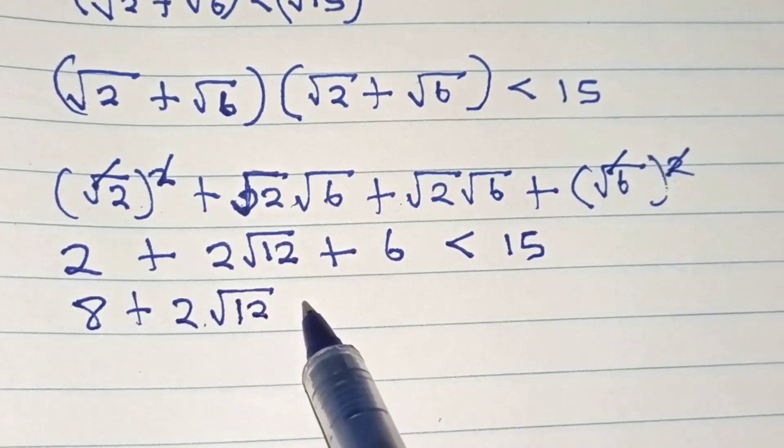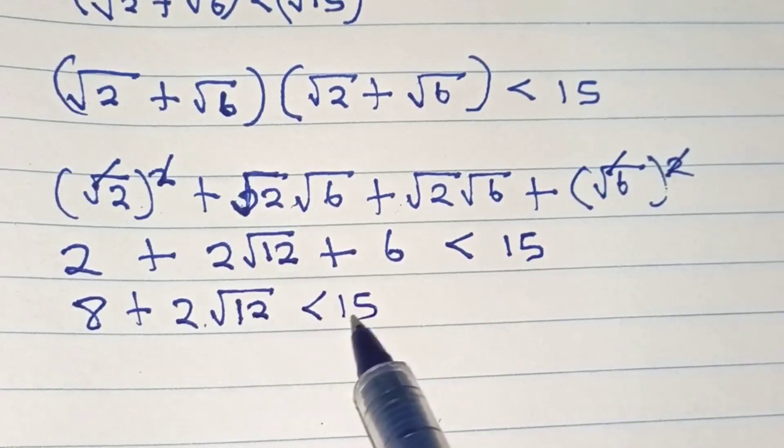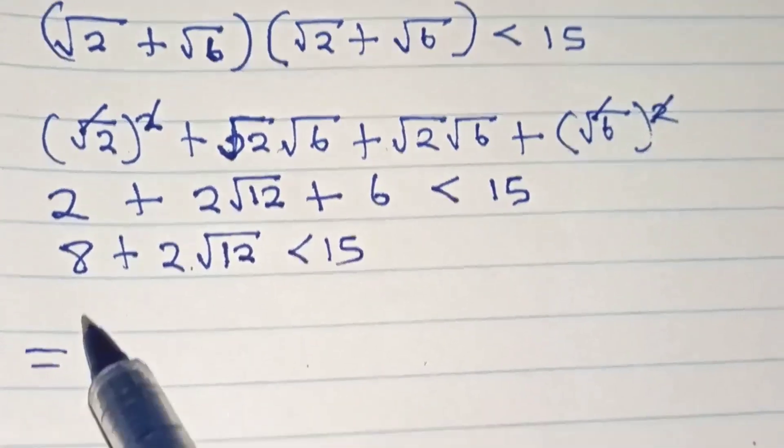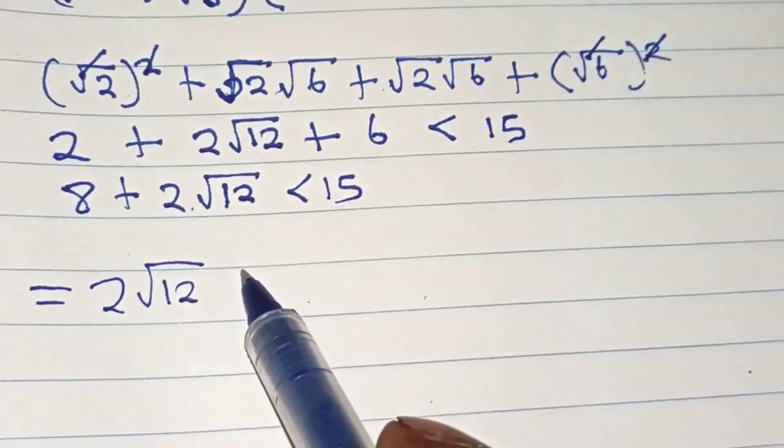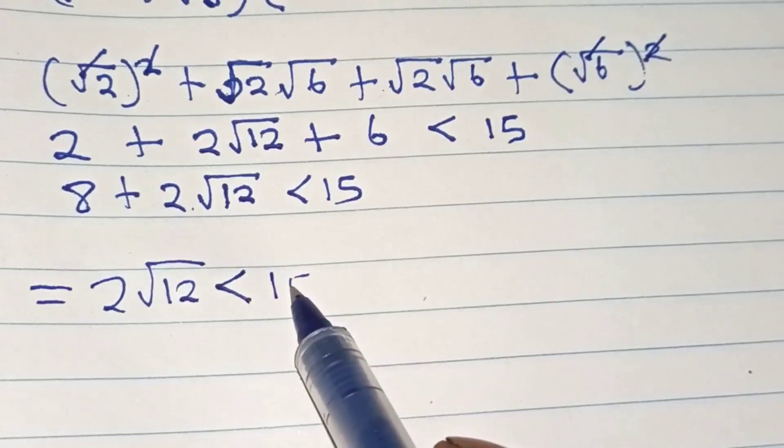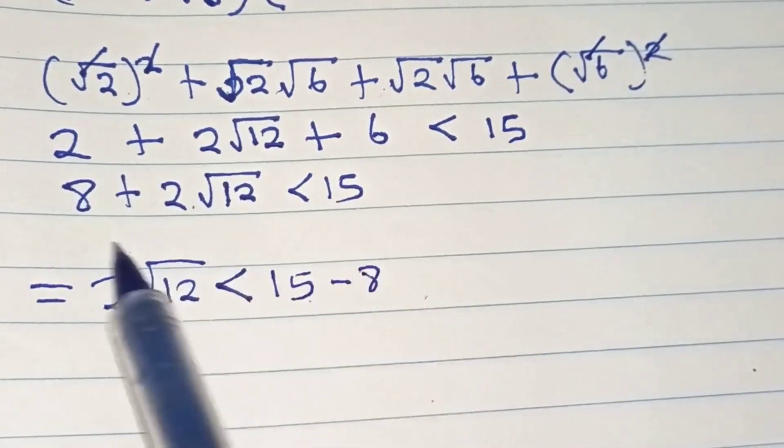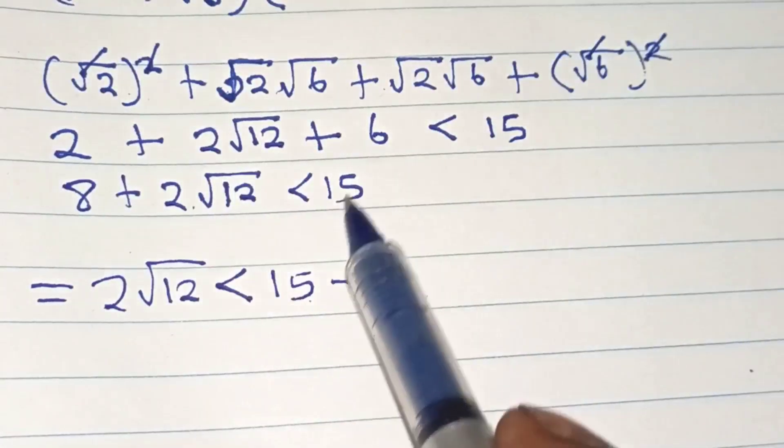So 2 square root of 12 is less than 15 minus 8, if the 8 crosses to the other side.